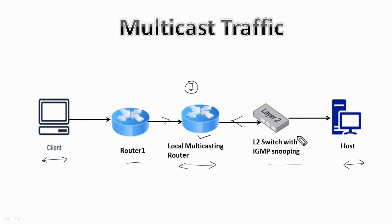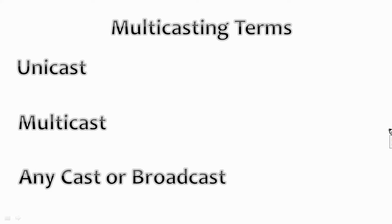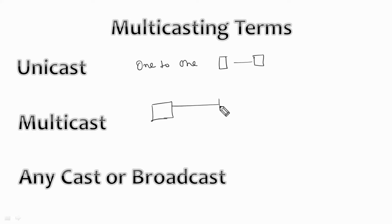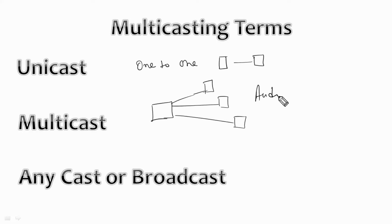Since IGMP is used for multicasting, let's look into this a little bit. The types of communication include unicast, multicast, anycast, and broadcast. Unicasting means the communication is one-to-one — for example, a walkie-talkie device. In multicast, the communication is from one to many, or to specific devices that are part of a multicast network or multicast group. An example is audio or video conferencing.